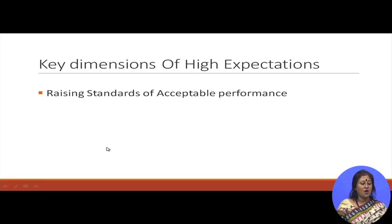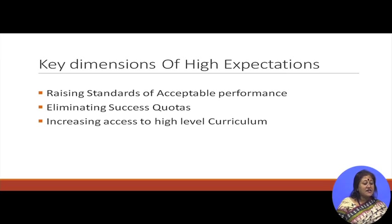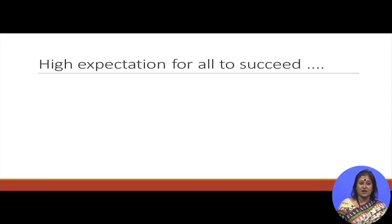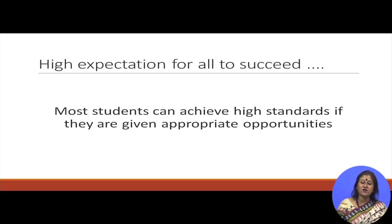Key dimensions of high expectations: raising students' level of acceptable performance, and eliminating success quotas — that means if a teacher thinks only 5 students in the class are intelligent and the rest are not, we have to eliminate that thinking. All can do very well. The outcome based learning promotes that. Increasing access to high level curriculum, and high expectation for all to succeed. Most students can achieve high standards if given appropriate opportunities.